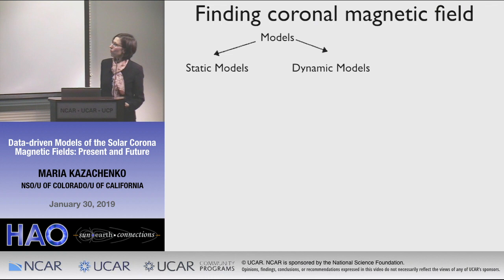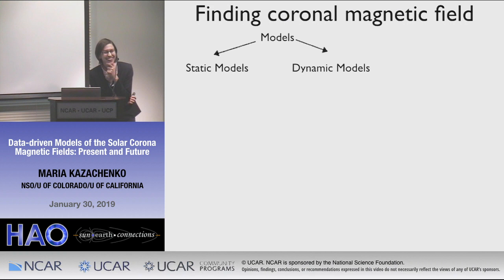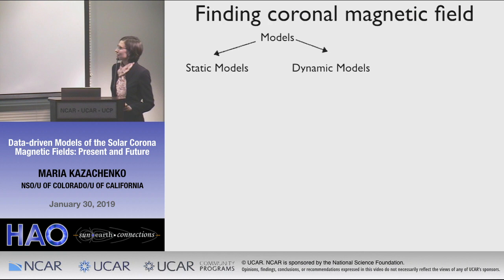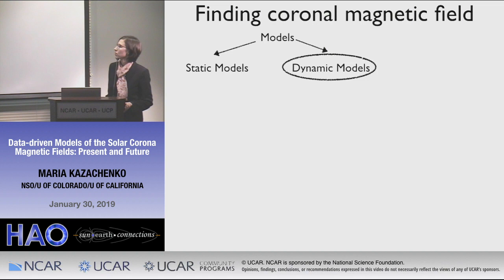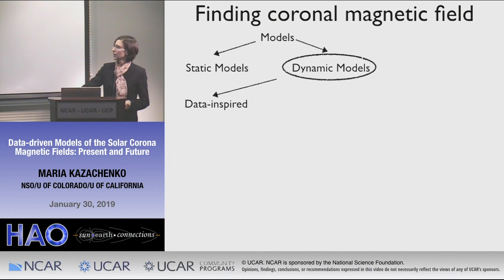Finding coronal magnetic fields is not an easy task because we cannot observe them directly — we cannot observe them at high enough spatial and temporal resolution needed to understand their energy accumulation. So people had to use models. There are two types of models: static models and dynamic models. Static models don't have temporal evolution. Today I'm only going to focus on the dynamic models — models that have T as a variable. Among these, there are three subgroups: data-inspired, data-constrained, and data-driven models.